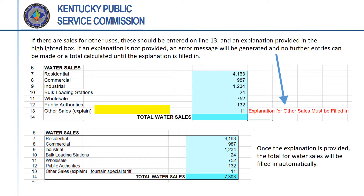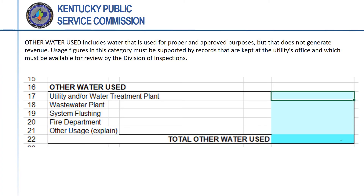Once lines 7 through 13 on the form have been filled out correctly, the form will calculate total sales. The next step is to enter water usage which does not produce revenue but which is for a proper and authorized purpose. As with the preceding portions of the form, this is entered in units of thousands of gallons.